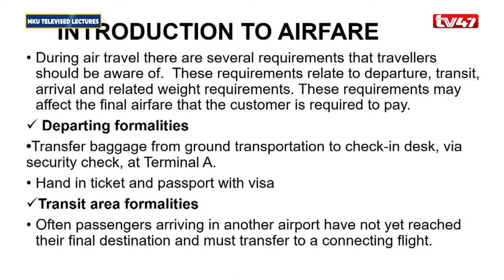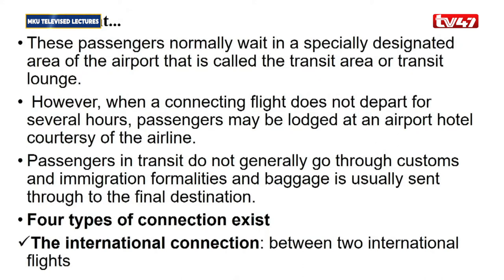We have the transit area formality — those areas where you have not yet reached your final destination. At the transit area formality, passengers are arriving in another airport but have not yet reached their final destination and must transfer to a connecting flight. These passengers normally wait in a specially designated area called a transit area or transit lodge. However, when a connecting flight does not depart for several hours, the passenger may be lodged at an airport hotel courtesy of that specific airline they had traveled with.